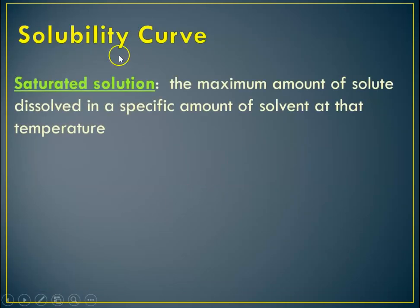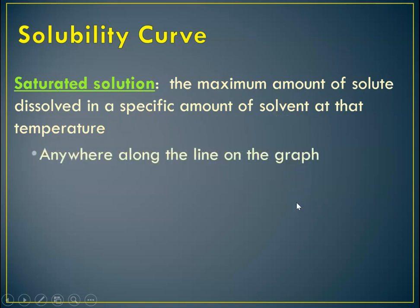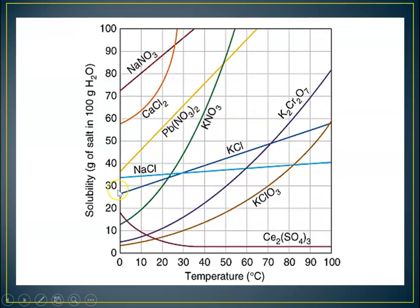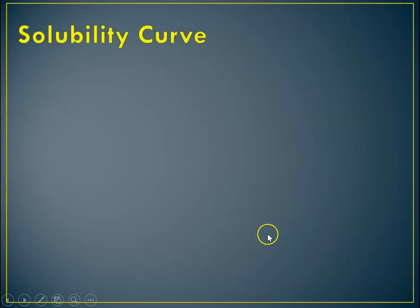So the solubility curve is showing me a saturated solution, the maximum amount of a solute that I can dissolve in a specific amount of water at that temperature. And that's anywhere along the line. The maximum amount that I can put at any given temperature is this line. If I am below that line, so let's say I only wanted to put in 30 grams of potassium nitrate at 30 degrees C, that means it is unsaturated. It's well below the maximum that I could put in.